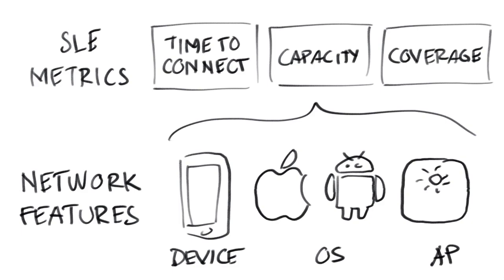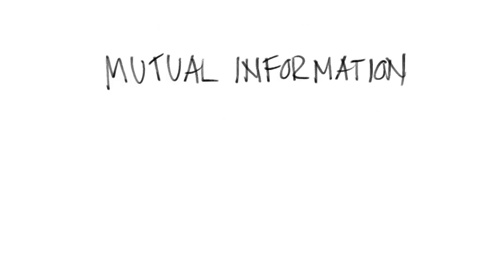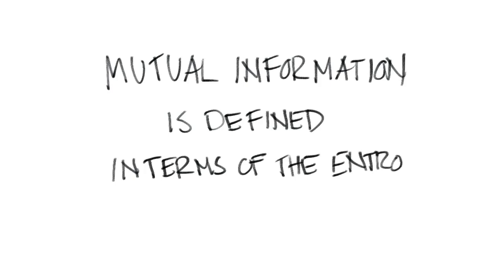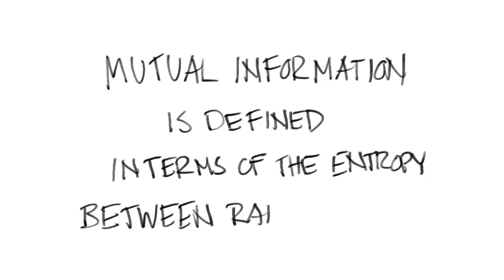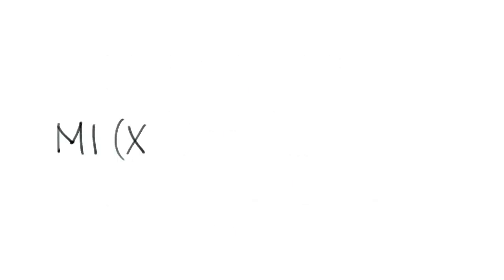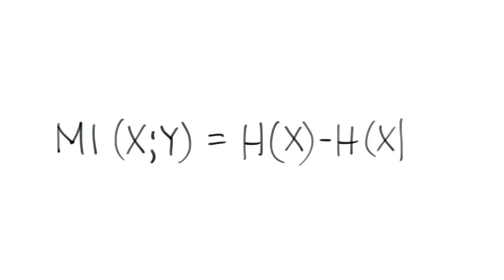Let's start with a definition of mutual information. Mutual information is defined in terms of the entropy between random variables. Mathematically, the equation for mutual information is defined as the entropy of random variable X minus the conditional entropy of X given Y.